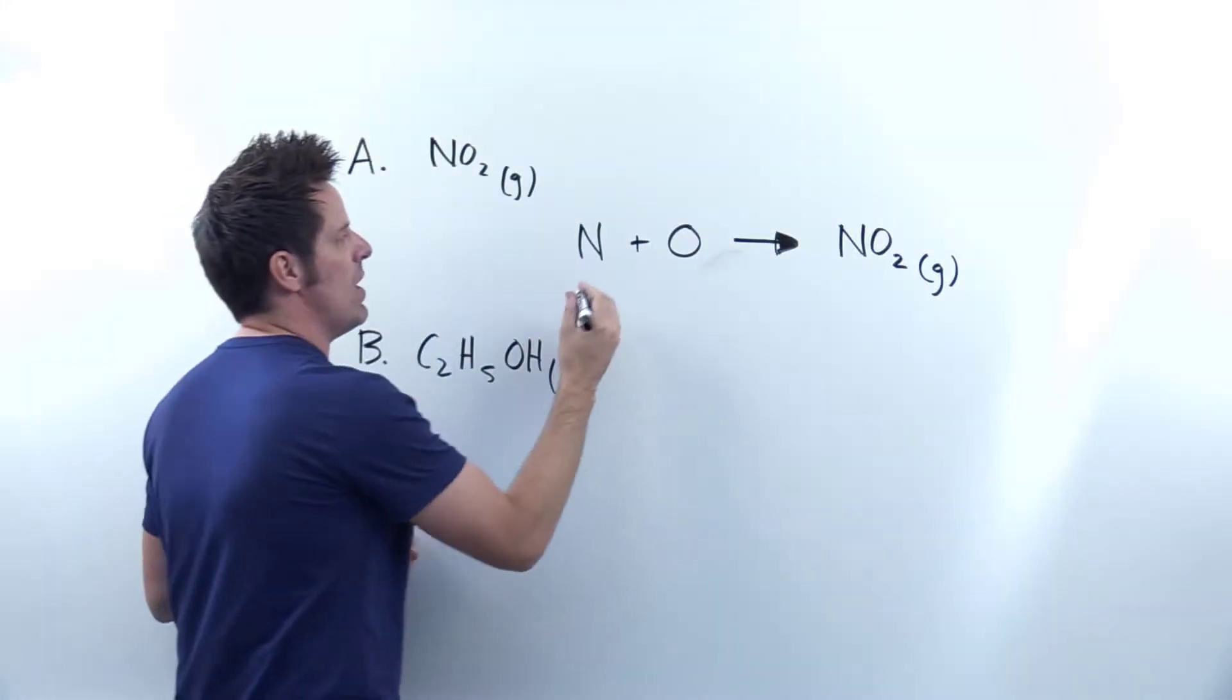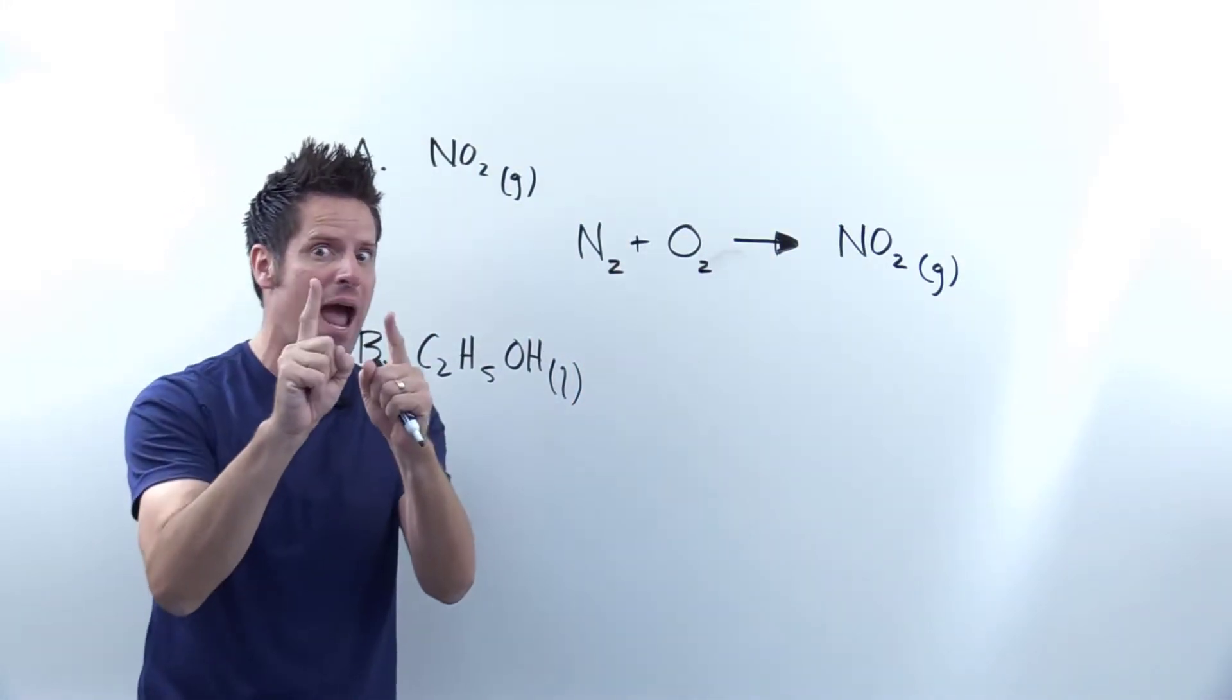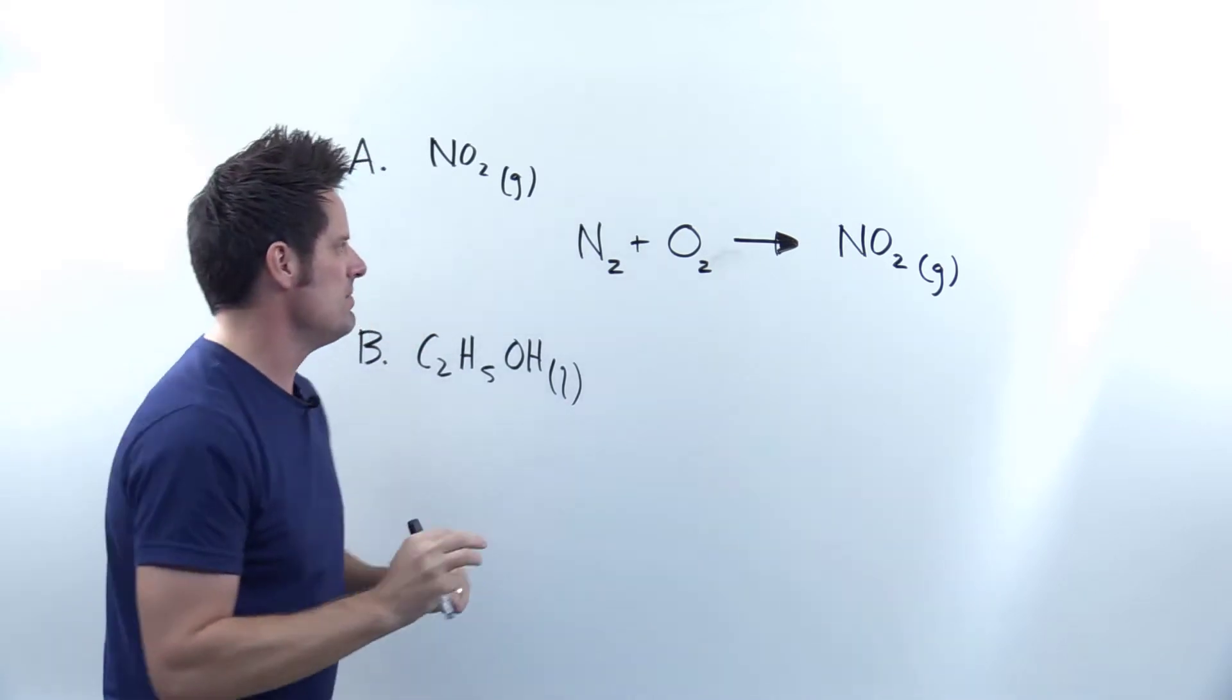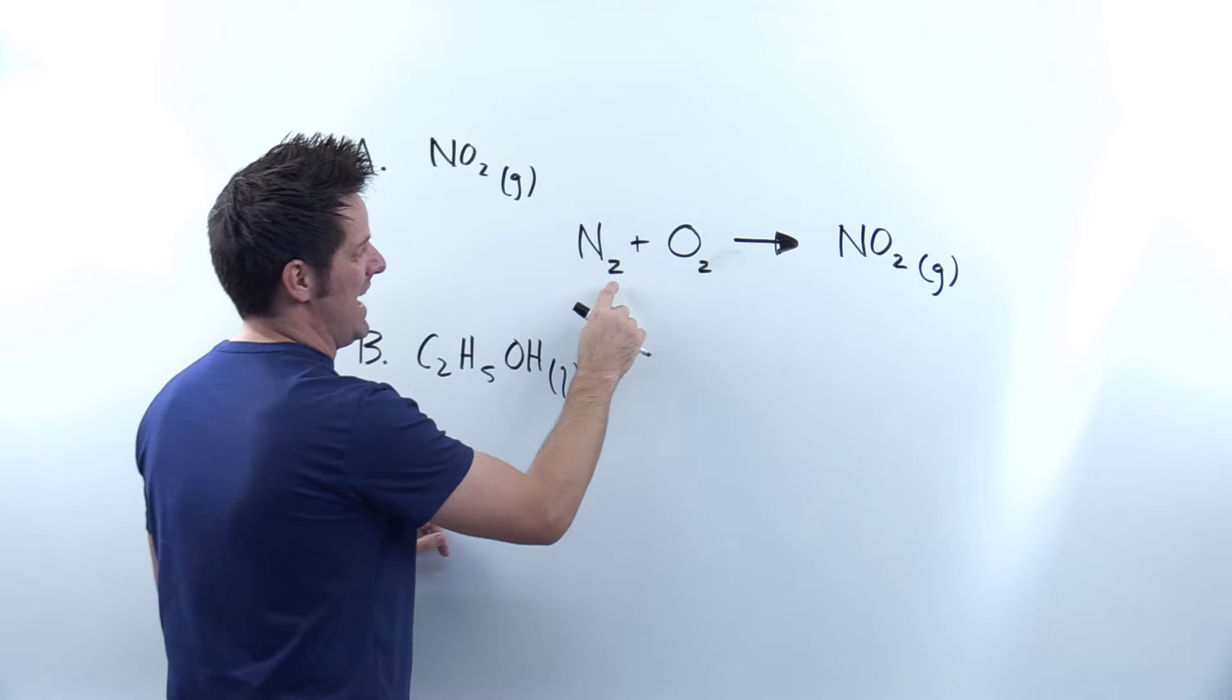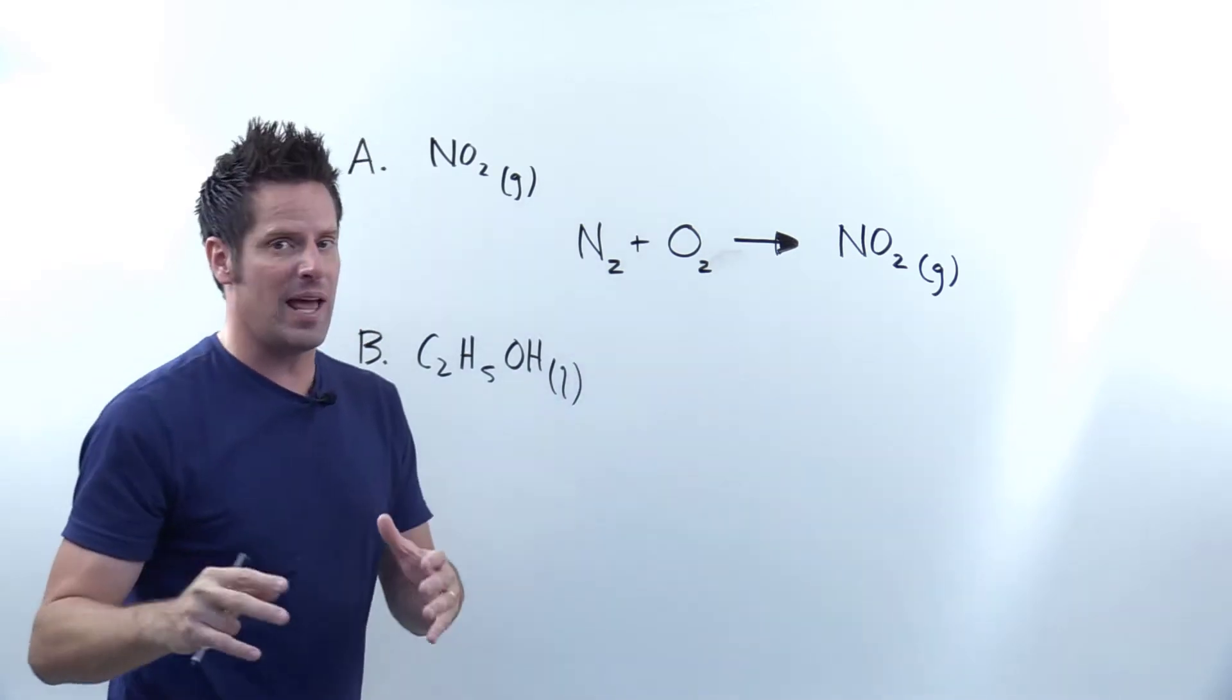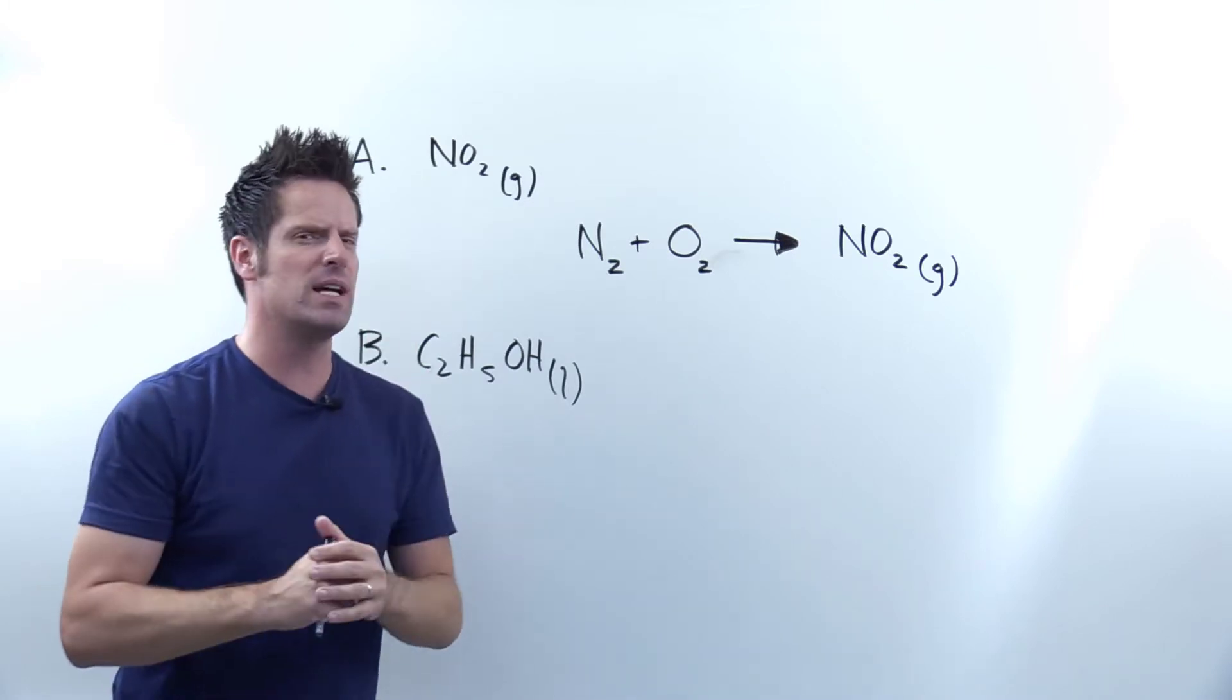In other words, you have to write a two for those because they exist as diatomic, that is two atoms linked together. So because these are of those seven, I write them down as diatomics. All other elements outside of the seven, we just write down as a single atom on the left. We're now done with step two.